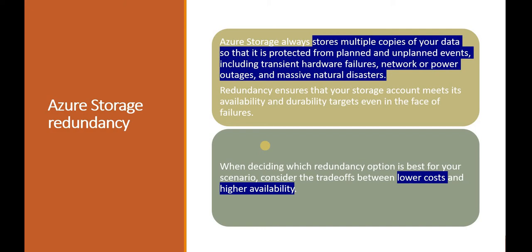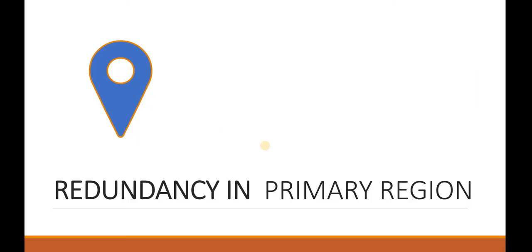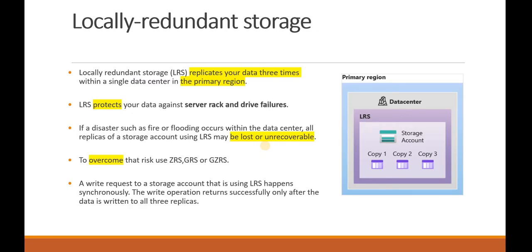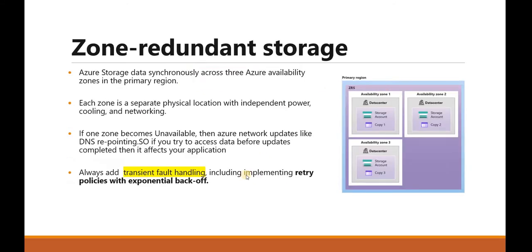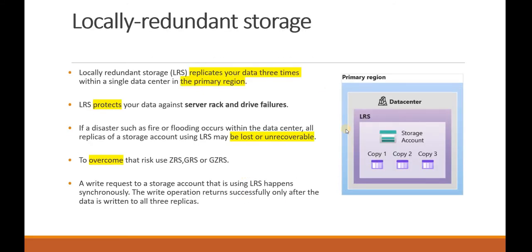Azure storage redundancy basically divides into two portions: primary region and secondary region. In the primary region, we have Local Redundant Storage (LRS). As you can see in the diagram, there is one storage account where, in one data center, we are copying the data in three different locations within that same data center.